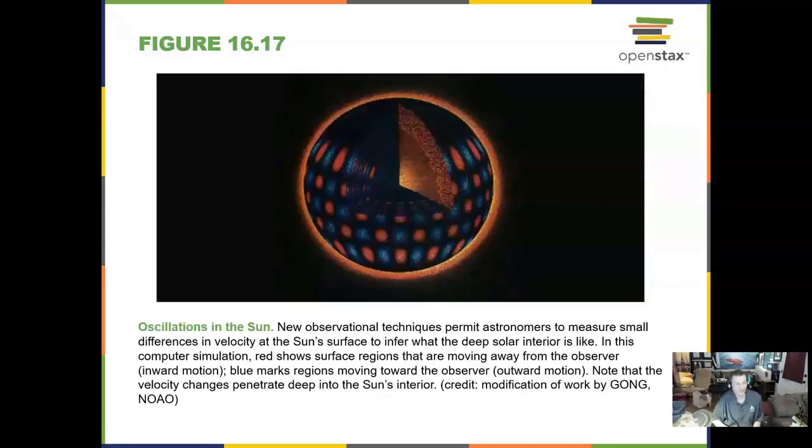One neat thing we found out about the Sun with a network called GONG, G-O-N-G, is to measure oscillations in the Sun. What we have found out is that the Sun vibrates about every five minutes. It vibrates and makes these oscillations. You can't hear them in what we hear, but we can put them on an oscilloscope and hear the sounds.